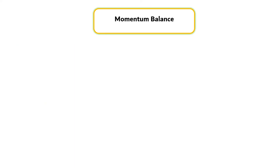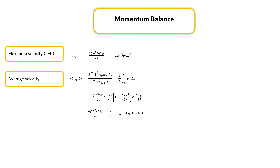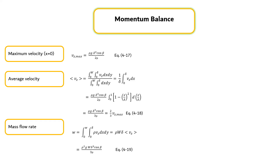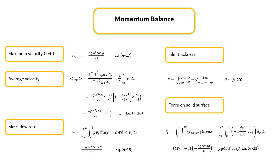Once the velocity distribution is known, a number of quantities can be calculated. First, the maximum velocity Vz_max is clearly the velocity at x equals 0, expressed by equation 4.17. Second, the average velocity of a cross-section of the film is obtained as shown in equation 4.18. Third, the mass flow rate w is obtained from the average velocity or by integration of the velocity distribution as shown in equation 4.19. Fourth, the film thickness may be given in terms of the average velocity or mass flow rate as shown in equation 4.20. Last but not least, the force f of the fluid on the solid surface is obtained by integrating the shear stress over the fluid-solid interface as shown in equation 4.21.